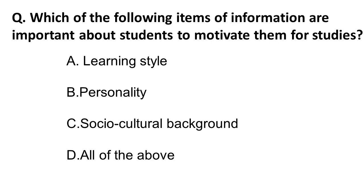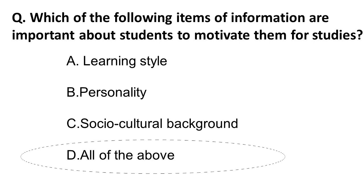The next question is: which of the following information is important about students to motivate them for studies? Learning style is important, personality of the individual is important, and the socio-cultural background of every student — which will be different — is also important. So the correct answer is all of the above: learning style, personality, and socio-cultural background.